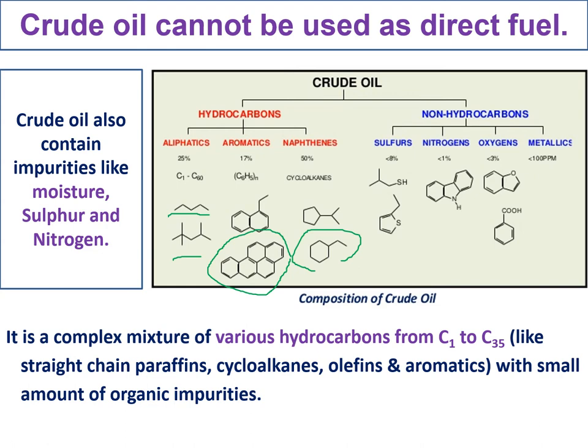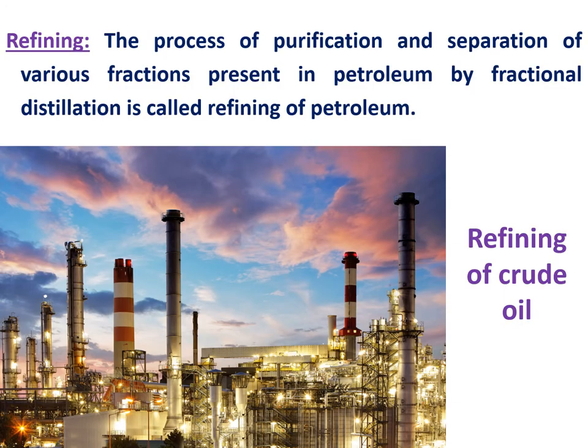That is why we require purification and separation. Because of impurities, purification is required; because it is a complex mixture, separation is required. This process is called refining. Refining means the process of purification and separation of various fractions present in petroleum by fractional distillation. The industries that do this are called refineries. Two main works are involved: purification and separation.